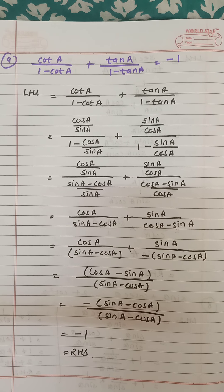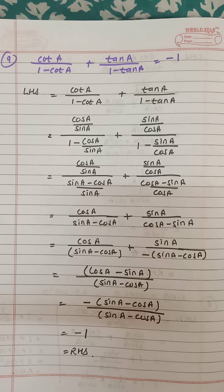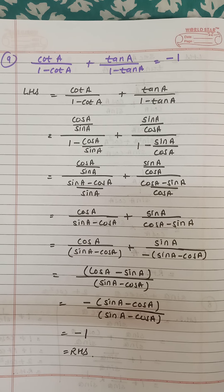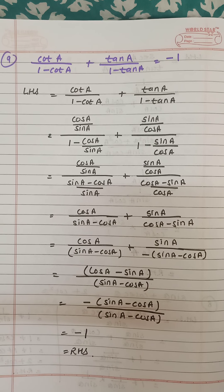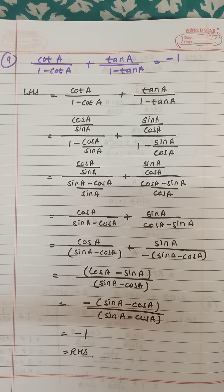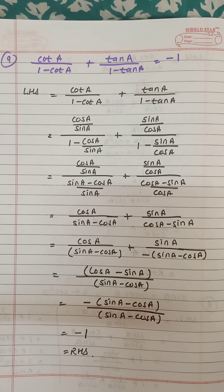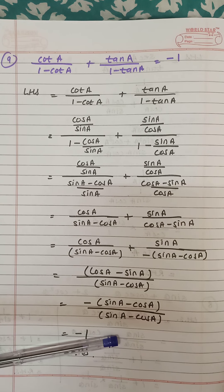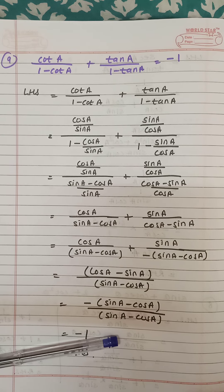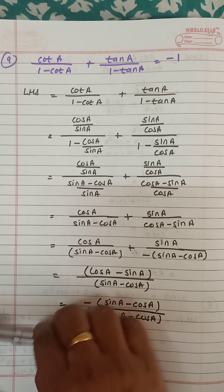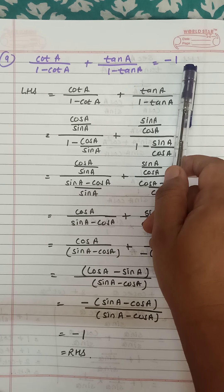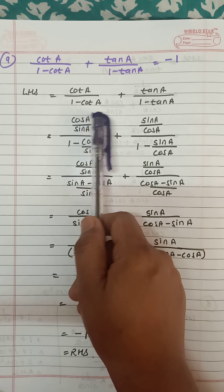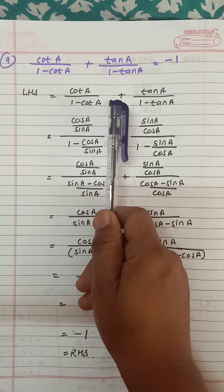Standard 10 question bank, trigonometry part 6. We are going to solve question number 9: cot a upon 1 minus cot a, plus tan a upon 1 minus tan a, is equal to minus 1. Left hand side is written here. For tan and cot, we have to substitute sin and cos.